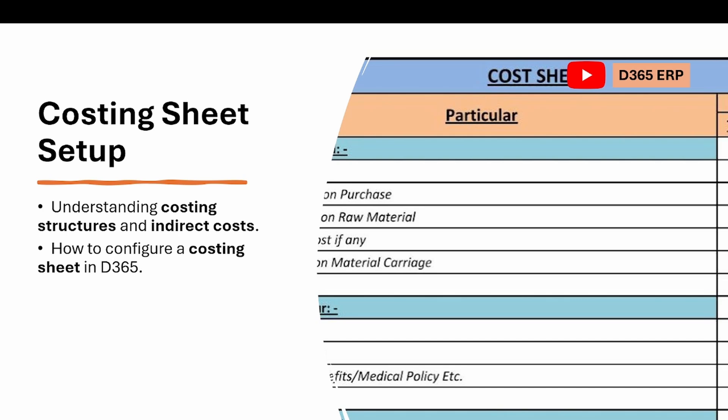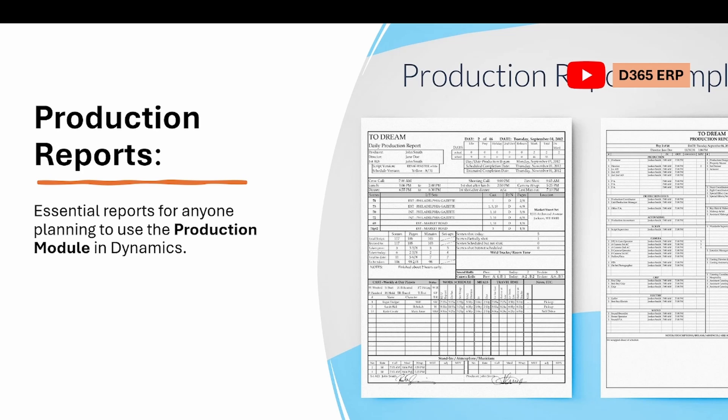We will cover how indirect costs get calculated and how you can configure the costing sheet in Dynamics. In the last part, we discuss production reports. Production reports help you get the status of all production orders. In this episode we will specifically discuss all important reports in Microsoft Dynamics 365 Finance and Operations, and I will also demonstrate some customized reports. If you are using Oracle or another ERP and are here just for manufacturing concepts, you can skip that episode as it is majorly focused on Dynamics reports.